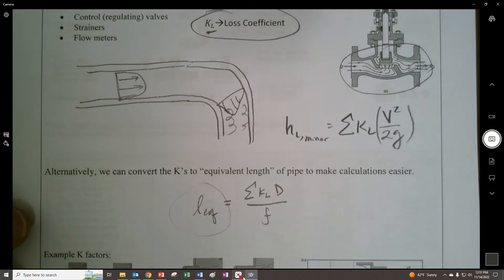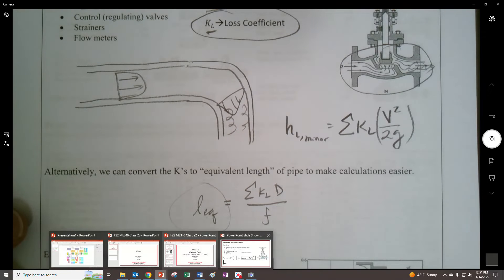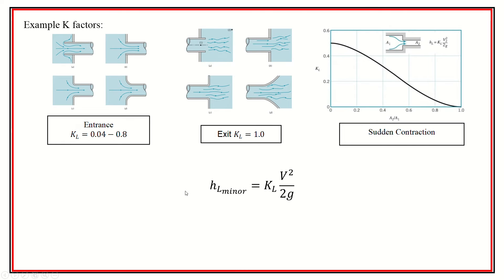That we use to try to find our head losses. So sometimes we have an equivalent length of pipe so that we can kind of use the minor losses in terms of the major losses, right? So we just use a different pipe length instead. Some examples: first off, the entrance and exit. You can kind of see that the entrance is nearly as large as the exit is right there.